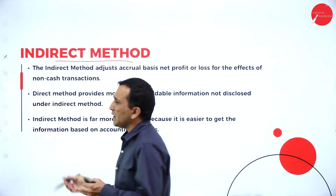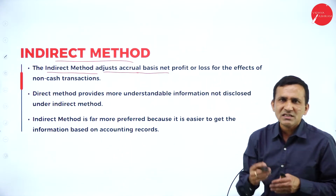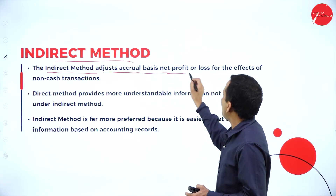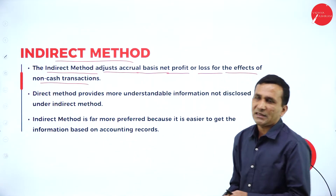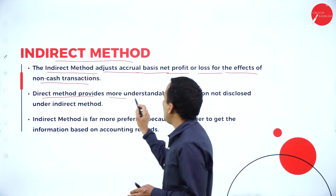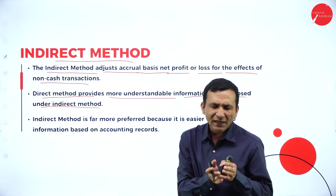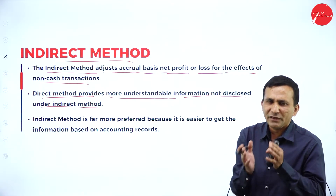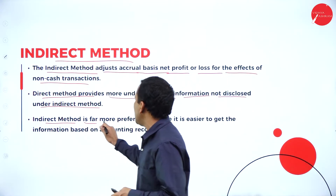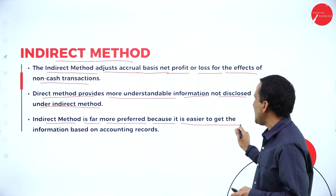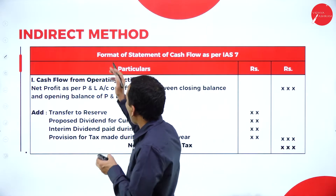Under the indirect method there are slight changes. The indirect method adjusts on an accrual basis — accounting for expected future items. It accounts for the effect of non-cash transactions. The direct method provides more understandable information not disclosed under the indirect method, while the indirect method discloses complete accounting information. The indirect method is more preferable because it is easier to get information based on the accounting records maintained in your company.